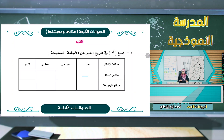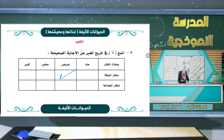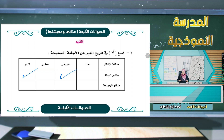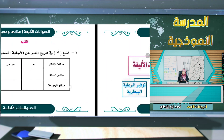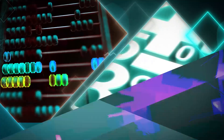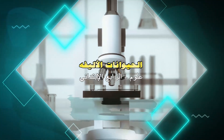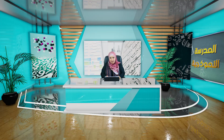أضع صح في المربع المعبر عن الإجابة الصحيحة: منقار البطة - عريض صح، كبير صح. منقار الحمامة - حاد وصغير صح. إذن منقار البطة عريض وكبير، ومنقار الحمامة حاد وصغير. عزيزي الطالب، بهذه الفقرة نكون قد وصلنا إلى نهاية حلقتنا لهذا اليوم. إلى اللقاء.